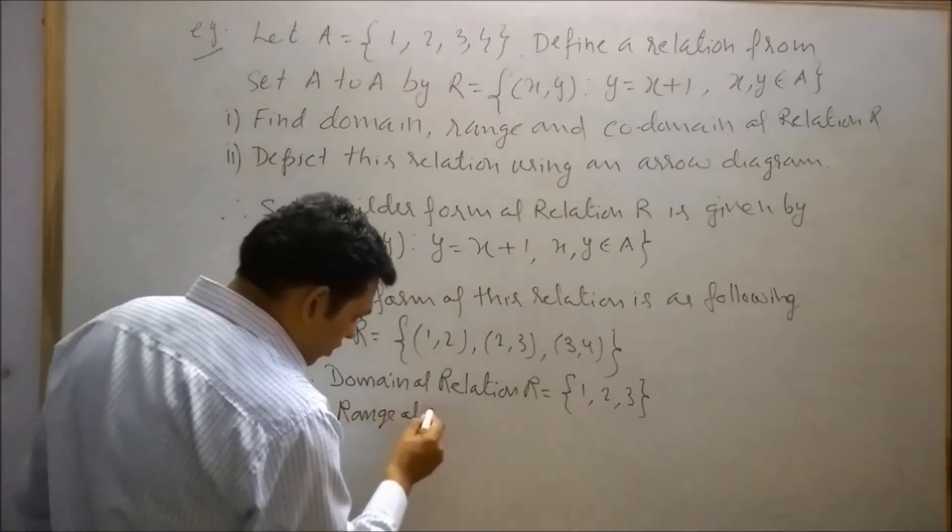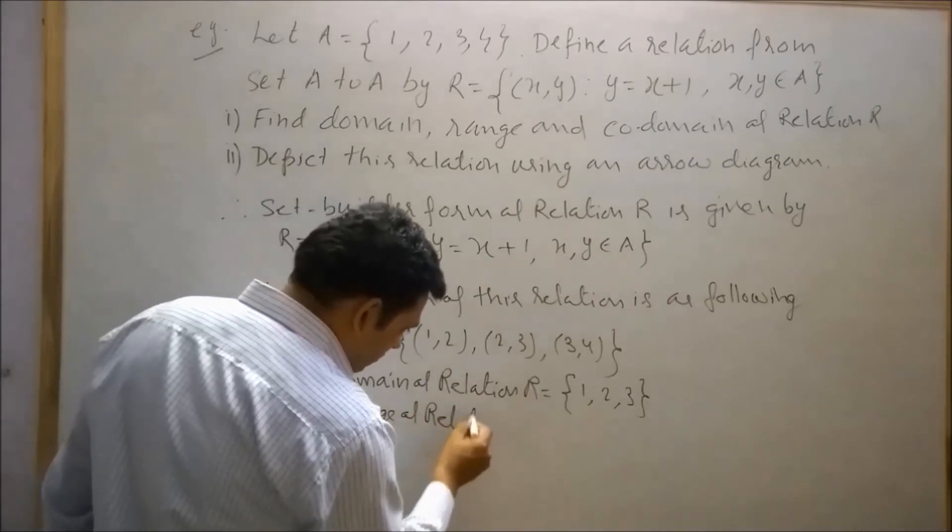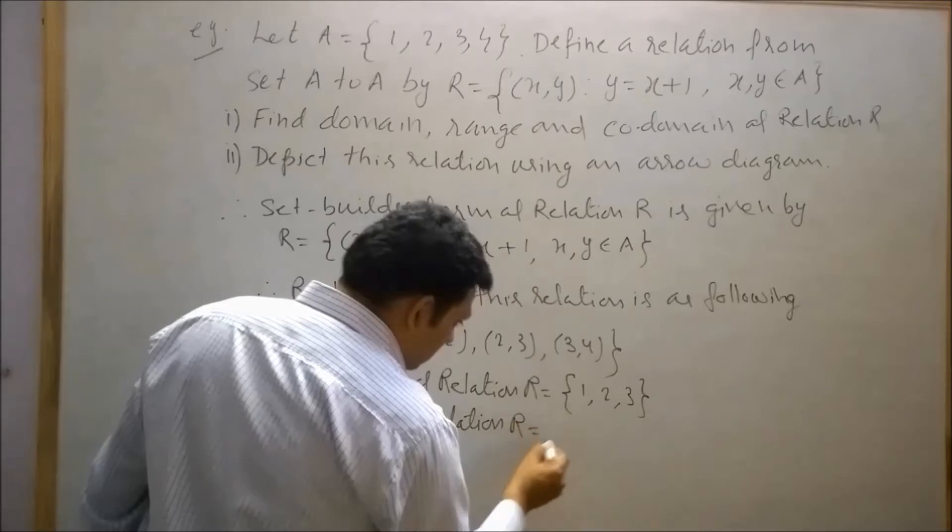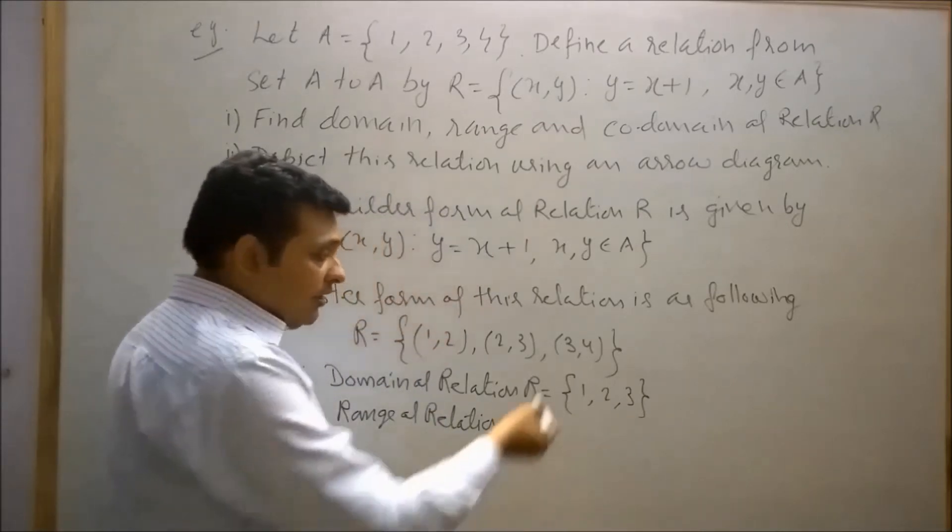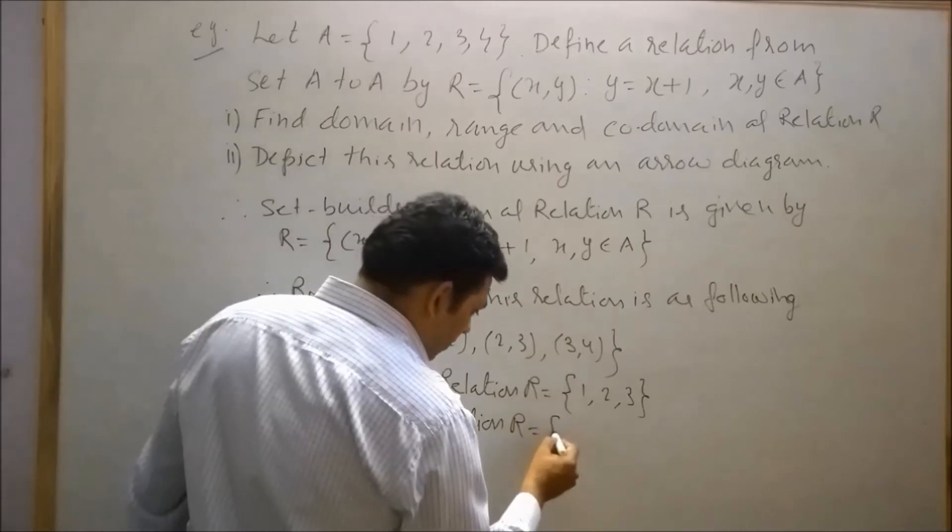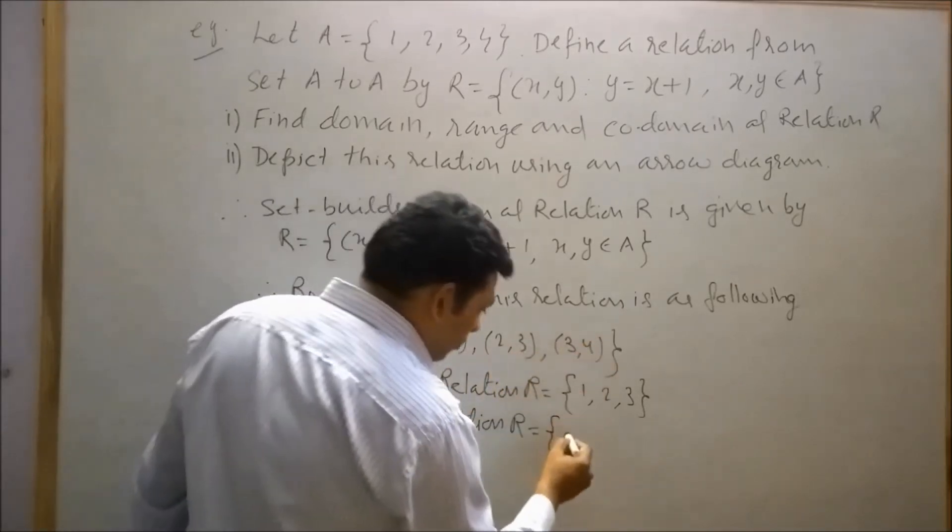Range of relation R is a set of the second element of the ordered pair. So range will be 2, 3, and 4.